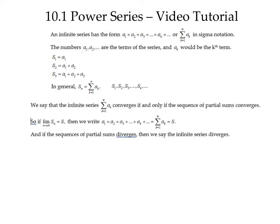We can use the sequence of partial sums to determine whether the original infinite series converges. This is important. We say that the infinite series, sum from k equals 1 to infinity of A sub k, converges if and only if the sequence of its partial sums converges. If the limit as n approaches infinity of the n-th partial sum is some real number S, then we can write the sum equals S. If the sequence of partial sums diverges, then we say the infinite series diverges.